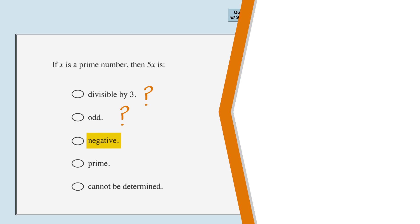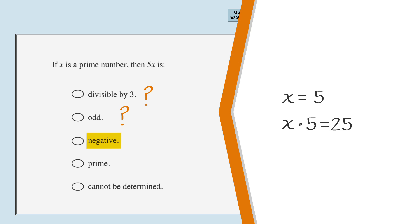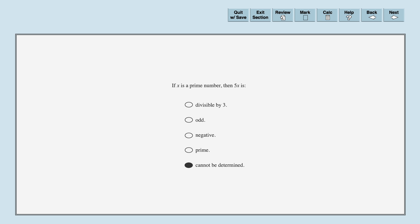How about the third answer choice? We know that all prime numbers are positive, so multiplying the value of x by 5 will always give us a number that is positive, not negative. Therefore, answer choice number 3 is not correct. Next, let's look at the fourth answer choice. Anything times 5 is going to have a factor of 5 and won't be prime, so the fourth answer choice is not correct. All we are left with is the fifth choice: cannot be determined. This is the correct answer because the first or second answer choices could be correct if we choose different values for x.